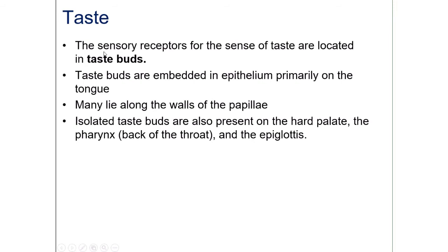The sensory receptors for taste are located in taste buds, many of which are embedded in the epithelium, mostly in the tongue. They are found along the walls of structures called papillae. There are also isolated taste buds found in the hard palate, the pharynx, and even the epiglottis. So when you eat something that tastes gross and the taste lingers at the back of your throat, that's not your imagination — there are actually taste buds in the pharynx.